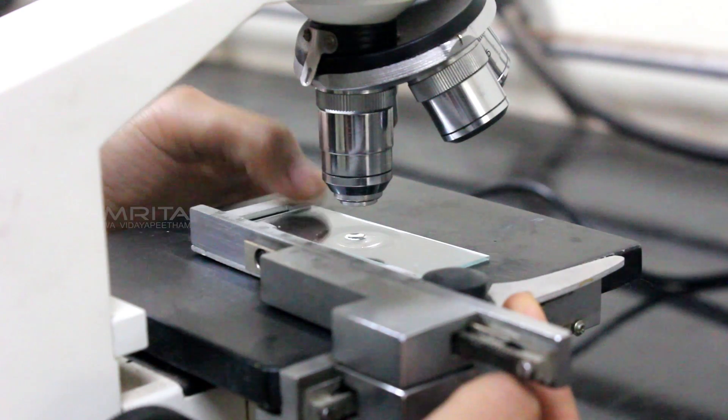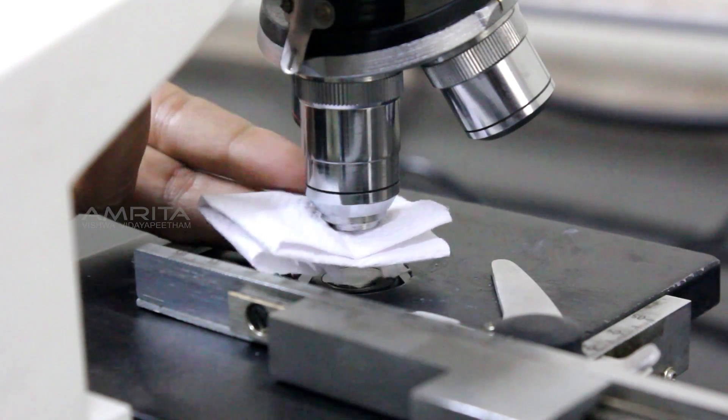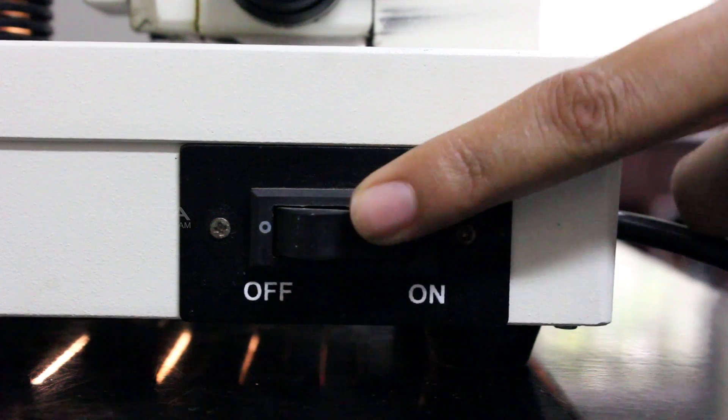Remove the slide and wipe the 100x oil immersion objective carefully with tissue paper to remove the oil. Finally switch off the light source.